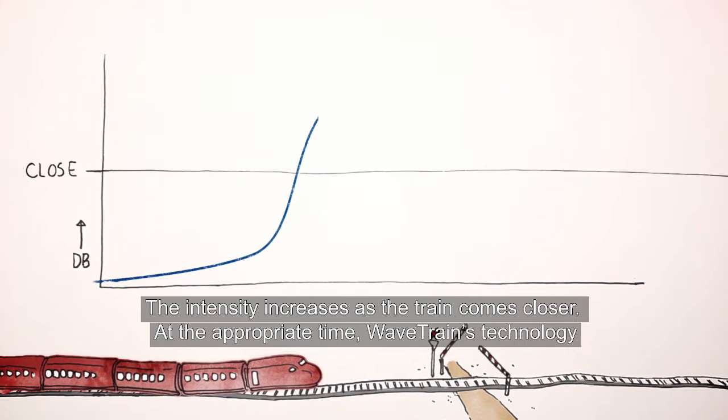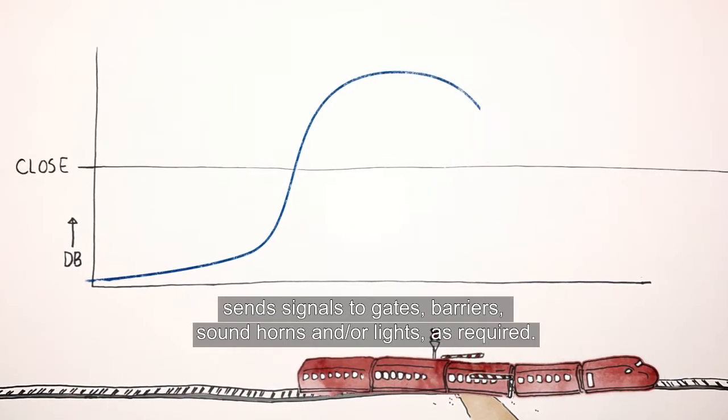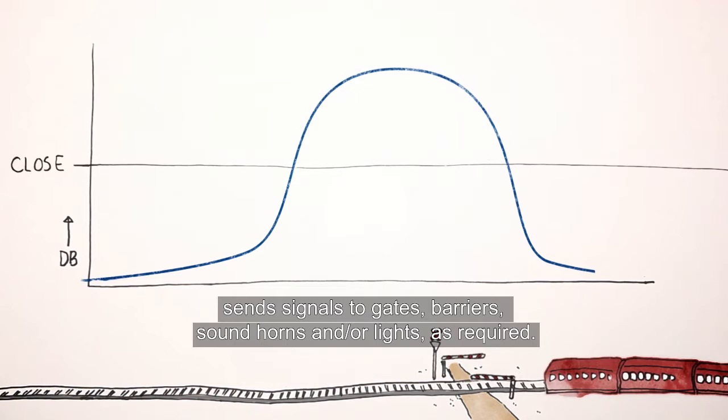At the appropriate time, Wavetrain's technology sends signals to gates, barriers, sound horns, and lights as required.